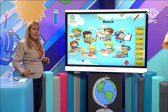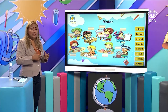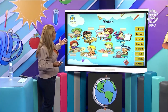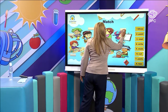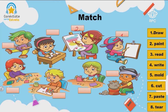Here we have a match. What are we going to do? Let's find the name of the action that represents the activity. For example, we have draw — where is the picture that says draw? Here. So you write number one. The second says paint — just right here we see it. You write number two. Then you have read — do you see the one that is reading? There is read.